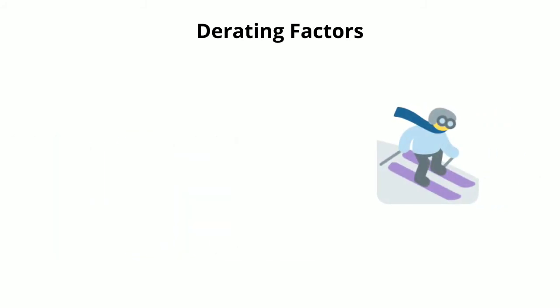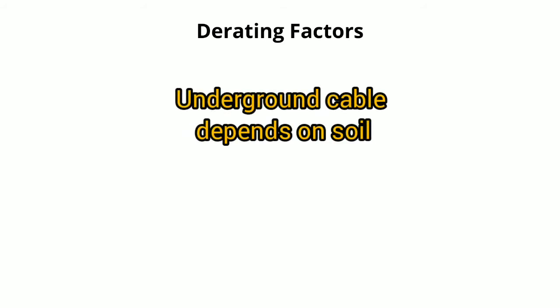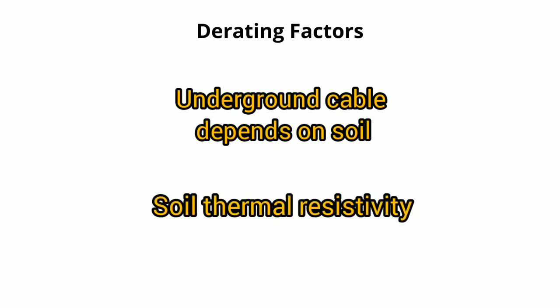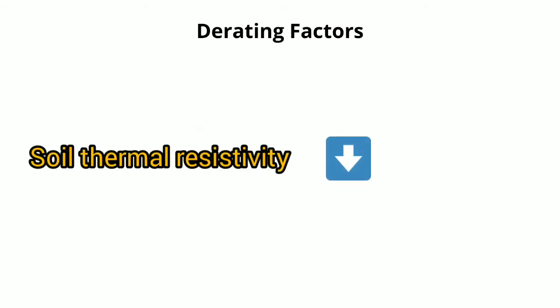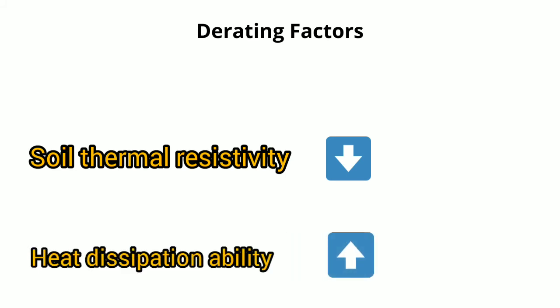Soil thermal resistivity. Underground cables depend on soil to dissipate heat. Soil ability to dissipate heat varies according to soil resistivity. The lower the soil thermal resistivity, the higher its ability to dissipate cable heat.